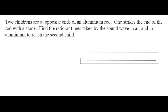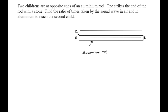Here I am showing an aluminium rod. Child A is on the left side and child B is on the other side of this aluminium rod. With the help of a stone, we are disturbing the aluminium rod so that the disturbance is propagated in the form of a wave — specifically a sound wave.